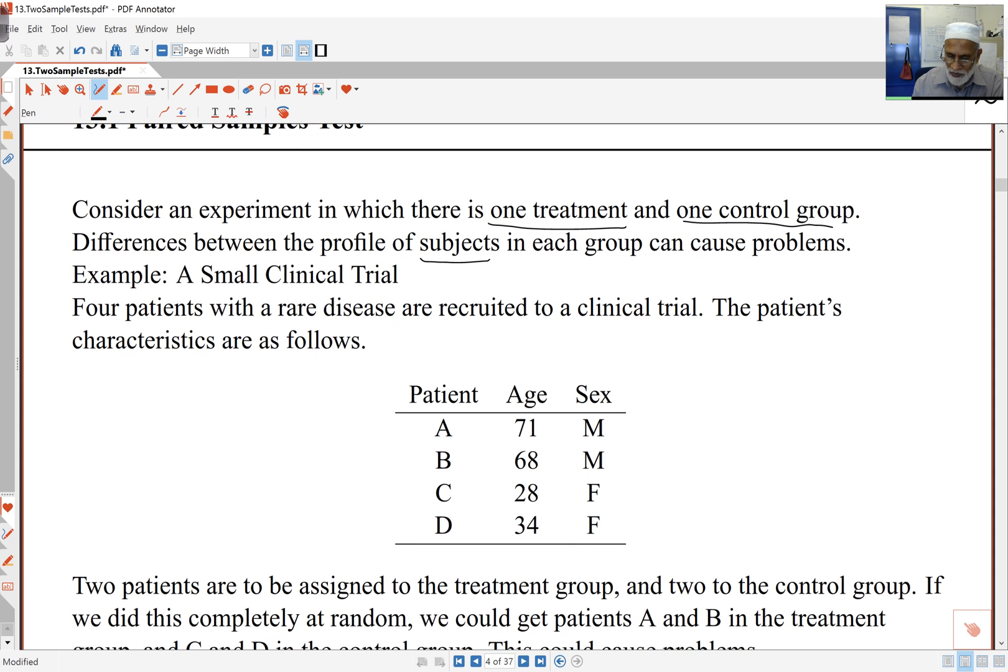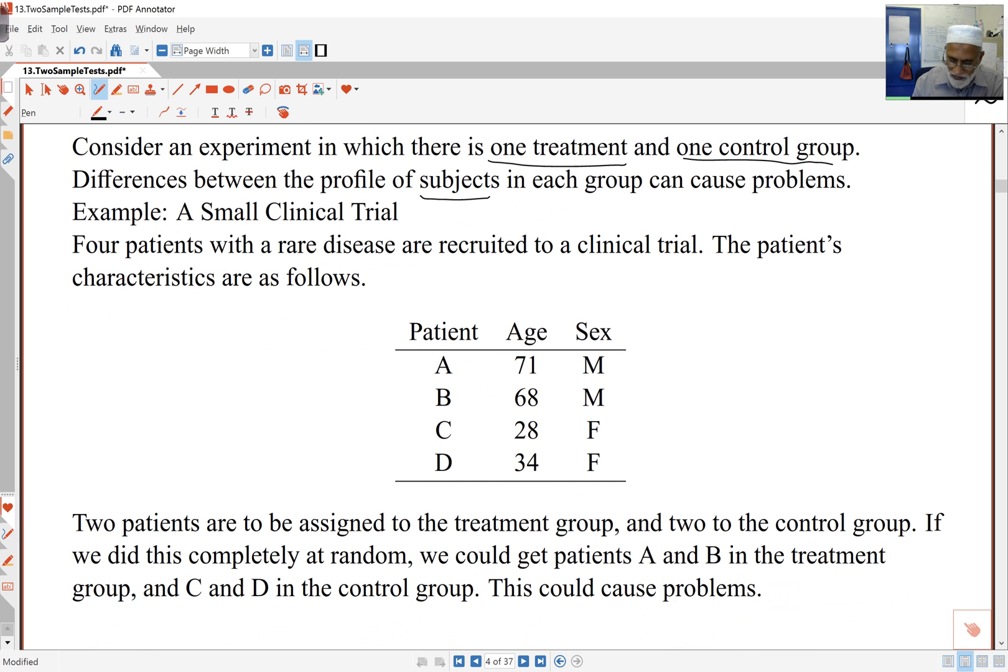So in an example, if I've got here patients A, B, C, D, two male, two female, and if I'm going to try and assign two patients to a treatment group and two to the control group. If it turns out that the two males go into the treatment group, and the two females go into the control group, then you can see an obvious problem here that any differences I see between these two groups, maybe because of the treatment, or because of the gender, the sex of the person. And I can't tell which it is.